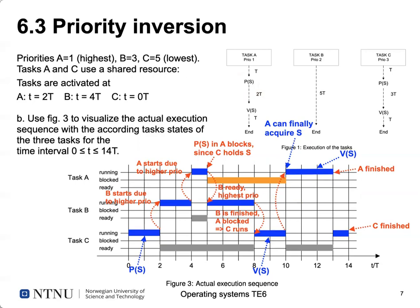Note: there is a mistake in the diagram here — the starting times of B and A are accidentally switched. Please assume task B is released at time two and task A at time four for this part of the diagram. With that correction: task B is released at time two with higher priority than C, so it runs for two time units until at time four task A starts.